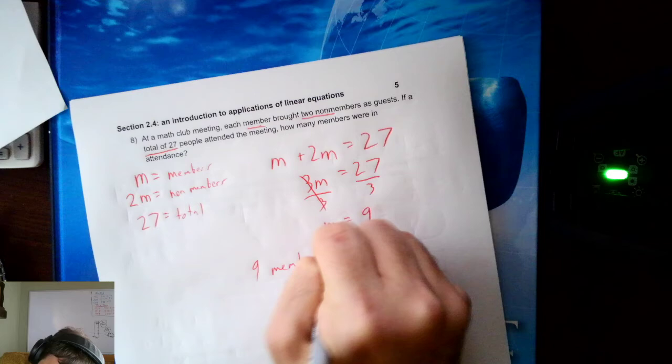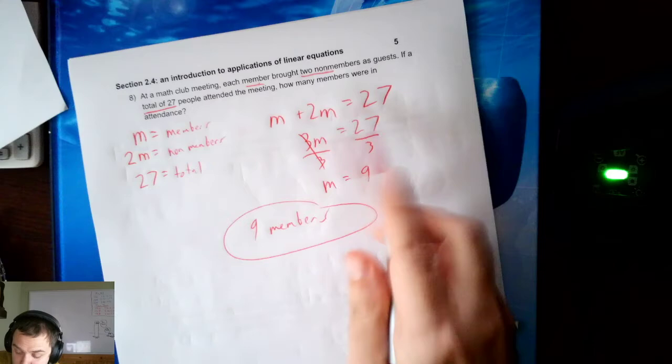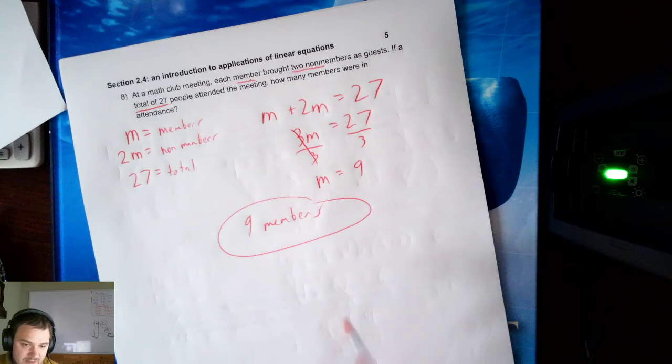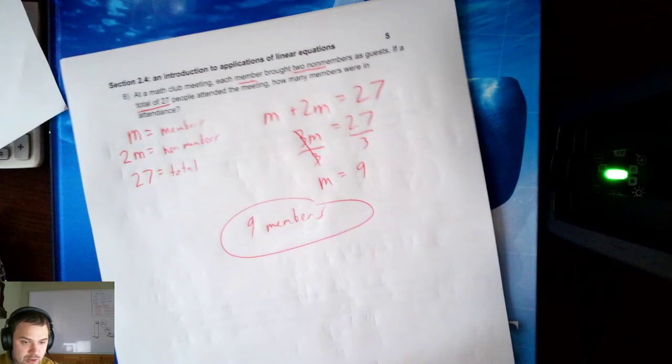9 members at the meeting. M is members, so I know there was 9 members. It doesn't ask about non-members, so I'm not going to talk about non-members. If it did, though, I would need to plug in here to find that there were 18 non-members. And that is our last example.